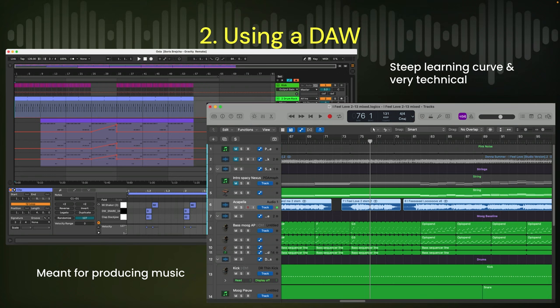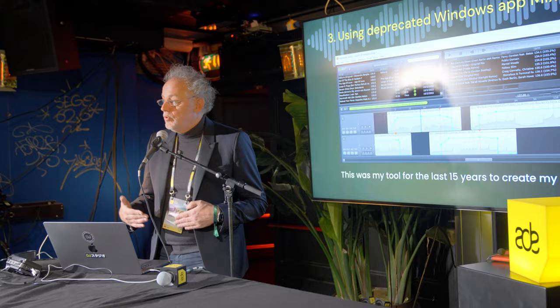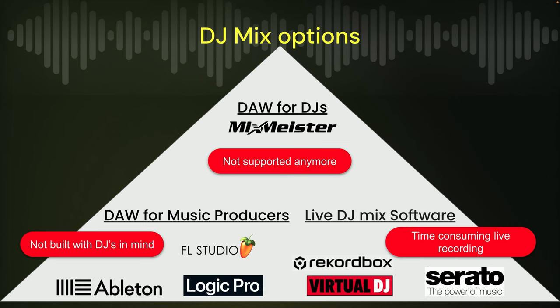Option two: the DAWs — Ableton, Logic. For me it's pretty impressive as a wannabe DJ playing with Ableton, but once I start reordering tracks I start saying less kind words. Option three was Mix Meister, which I used for 15 years — a Windows application with a timeline where I could make playlists. Unfortunately it got deprecated. If you look at the landscape: Mix Meister is not supported anymore, the live software is time-consuming, and DAWs are for producers.